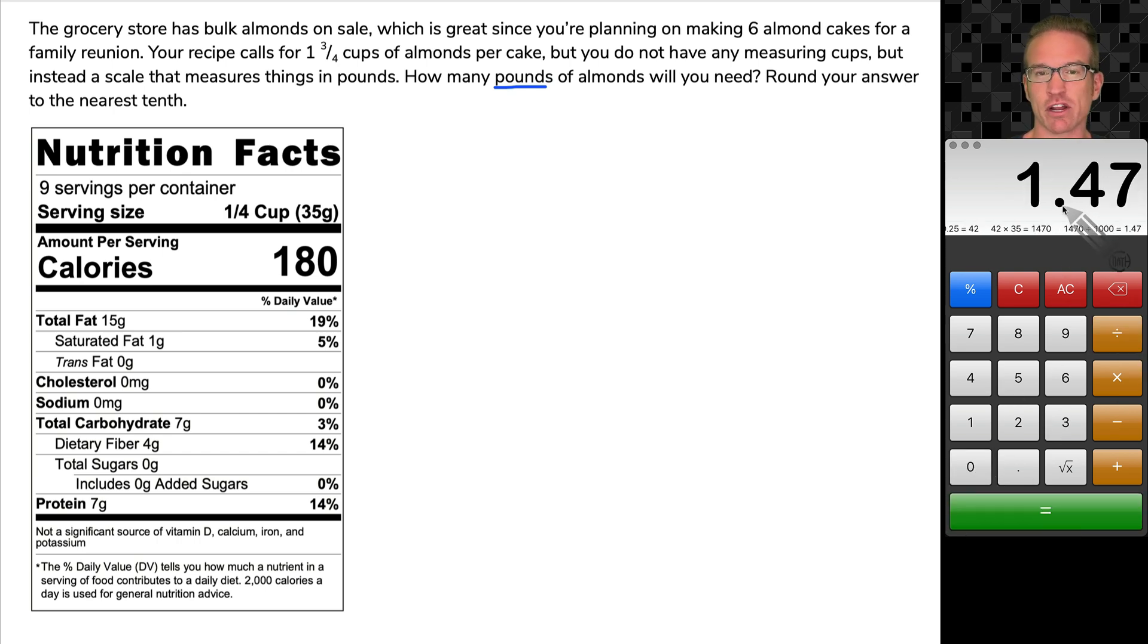If we take this 1,470 grams and we divide that by 1,000, we are essentially converting those 1,470 grams to kilograms, which is 1.47 kilograms.